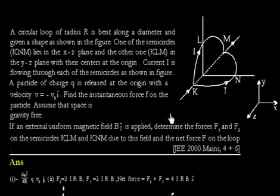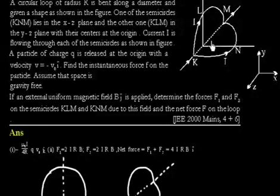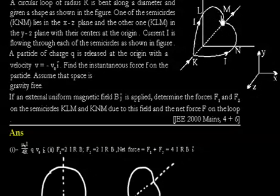To find the force, remember it is QB cross V, so the key is to find the magnetic field. We need to find the magnetic field at the origin. Looking at the magnetic field due to this half wire — the circular wire — due to KLM, the magnetic field will be in the minus X direction.